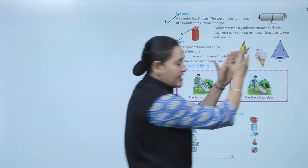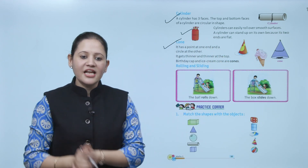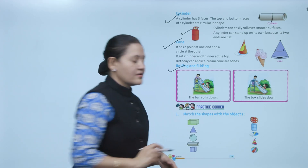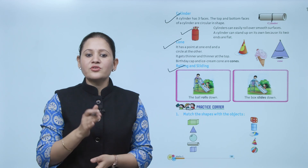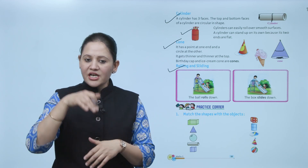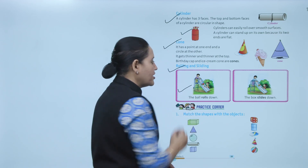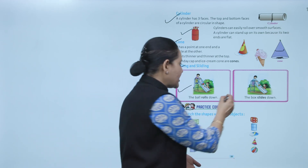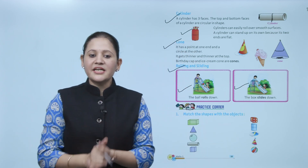Next is rolling and sliding. What is the difference between rolling and sliding? The ball rolls down — any circular object will roll. But a flat surface object will slide. The ball slides down flat surfaces.